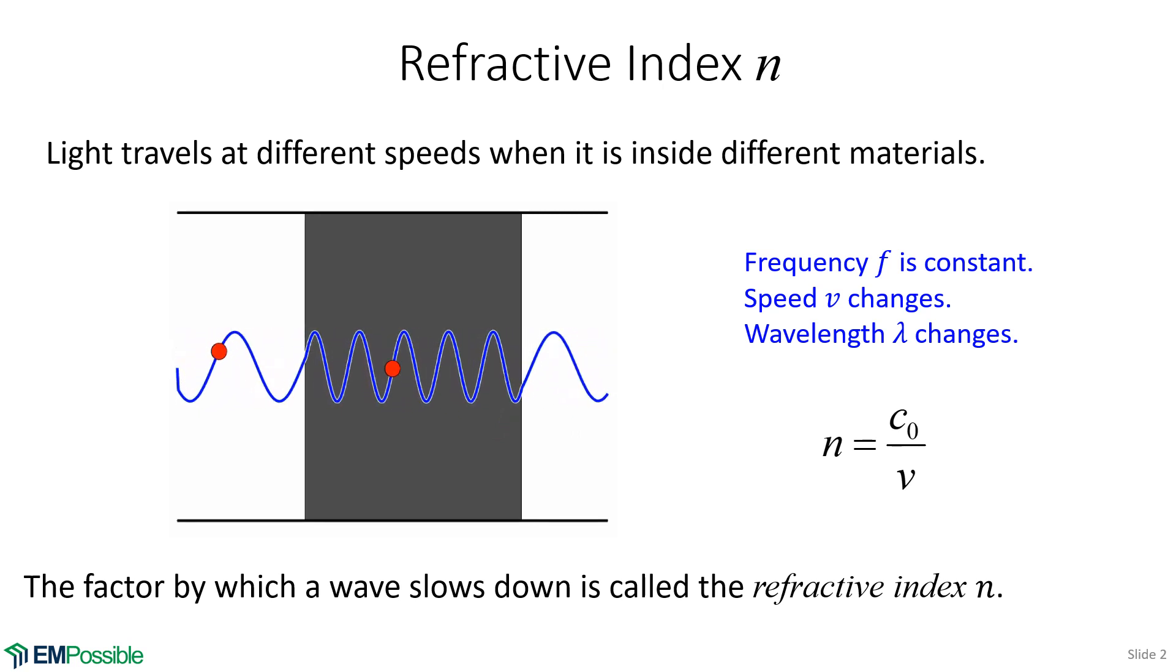When the wave slows down, the wavelength also gets shorter. A higher refractive index means the wave slows down and so does the wavelength. But notice what does not change—the frequency. This red ball oscillates at the same speed. Frequency is constant, but the speed and wavelength change in proportion to the refractive index parameter n.